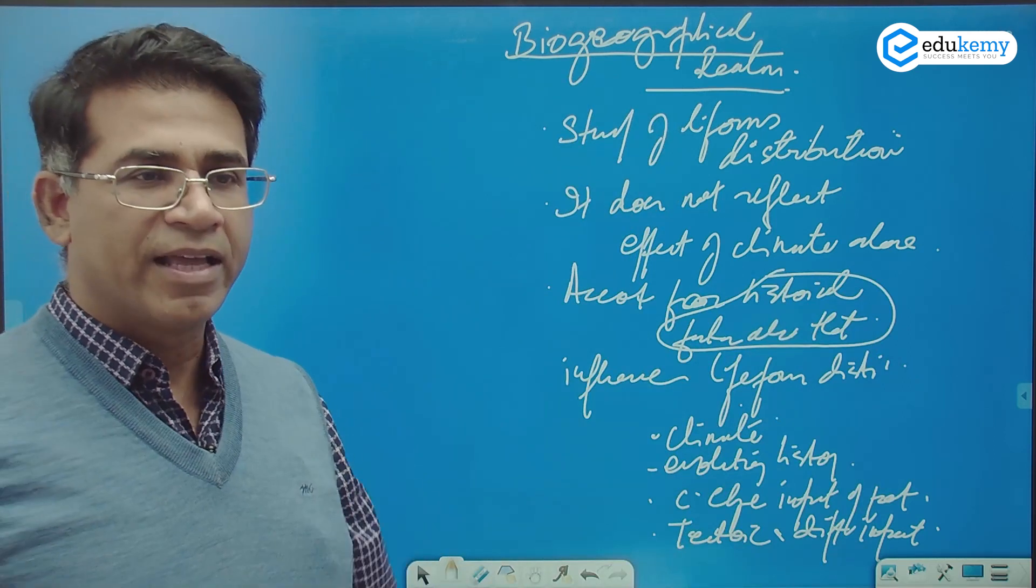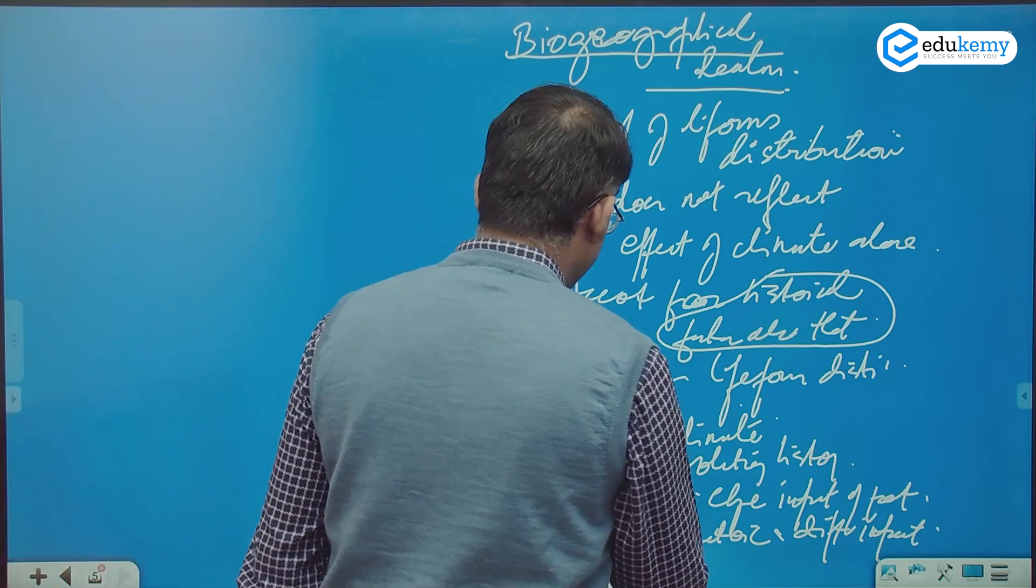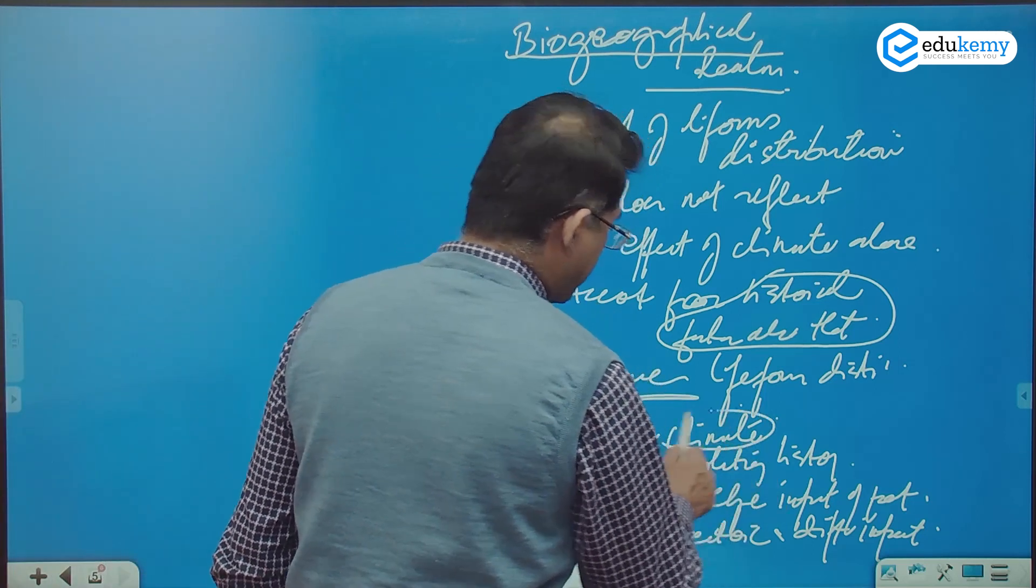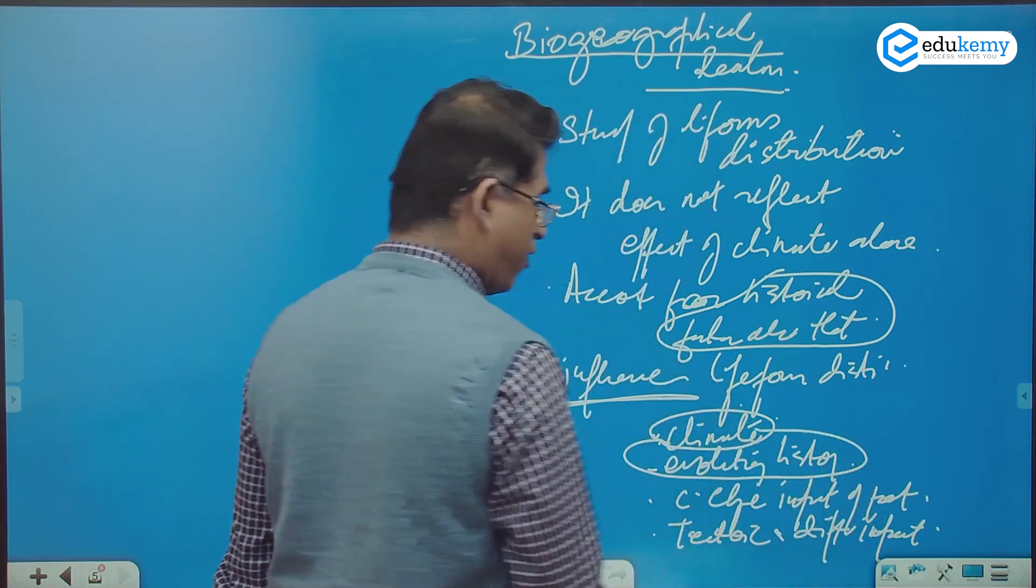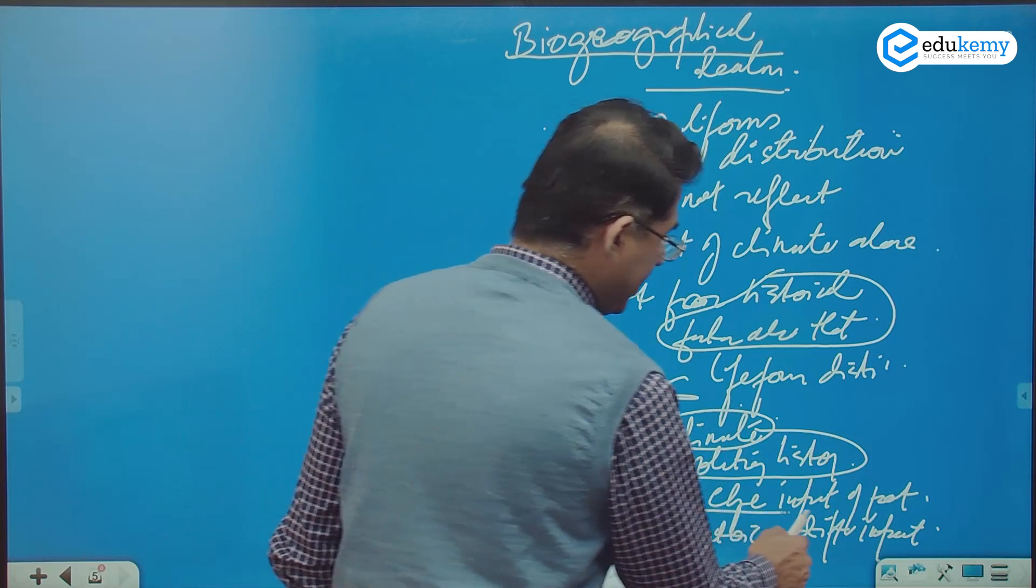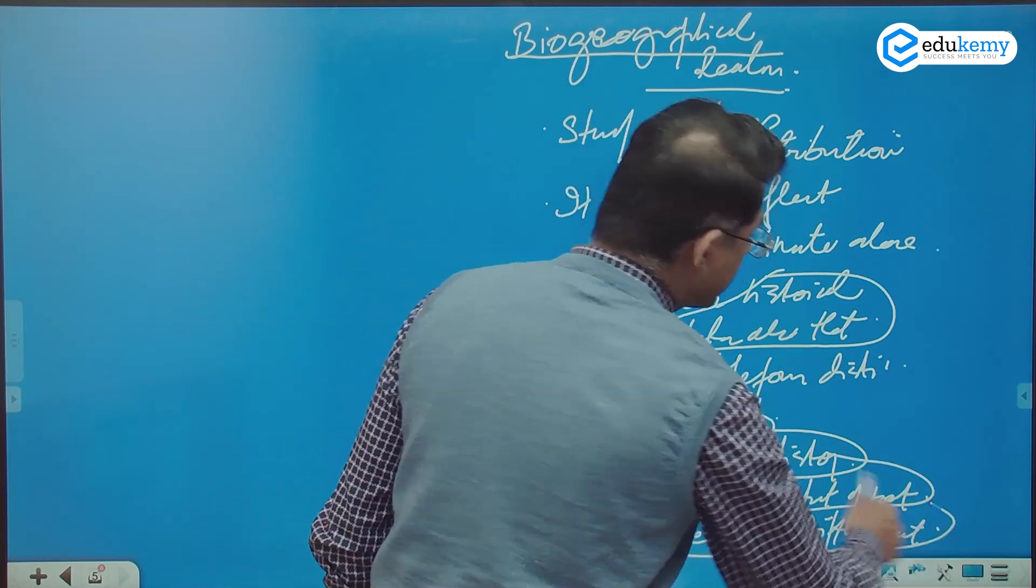And very importantly, if I combine all the factors, effects, so influence of what? Influence of climate, impact of evolutionary history of the life form, the climate change impact of the past and also tectonic and drift impact.